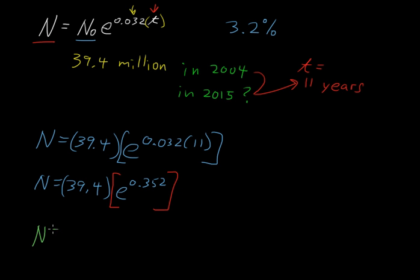And I'll just jump to the answer here then. The population 11 years later would be about 56.0 million people.